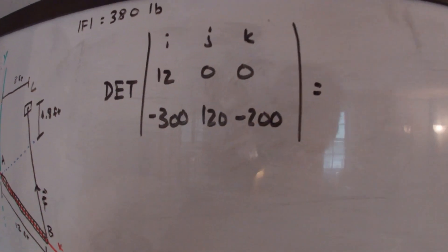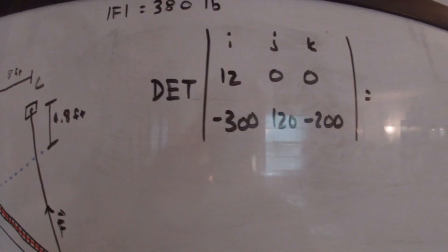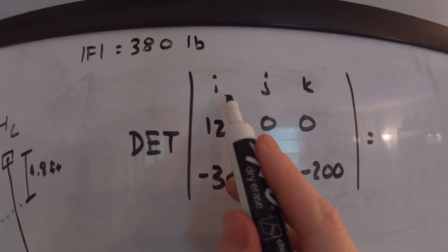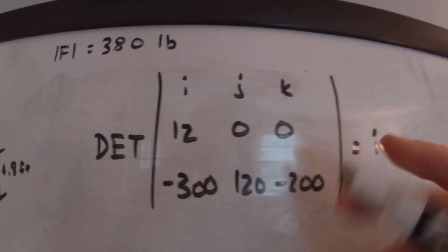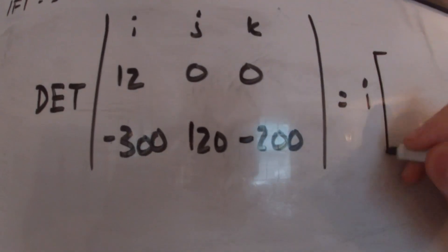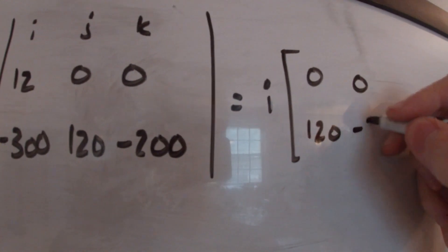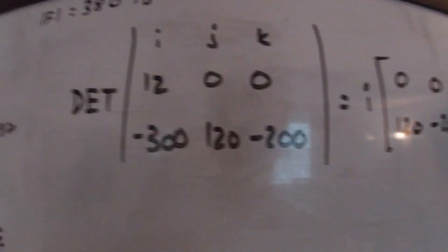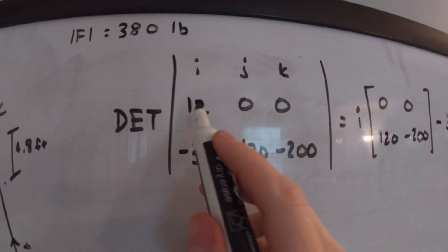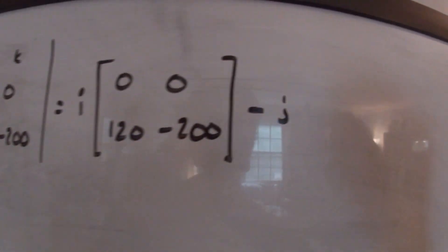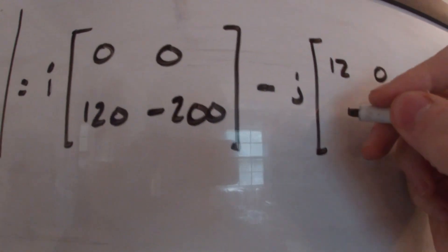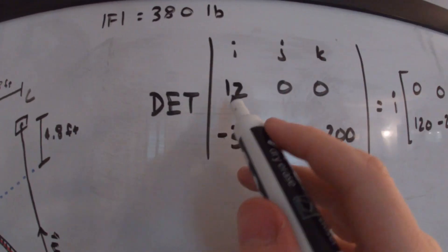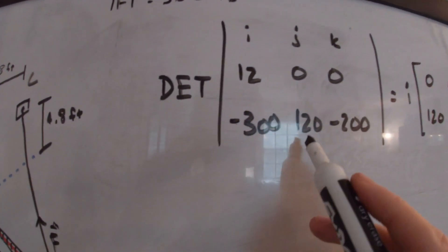When we take the determinant of this 3D matrix, we first break it into three smaller determinants. Our first is I times the determinant of [0, 0; 120, −200]. Then minus J times the determinant of [12, 0; −300, −200]. Then plus K times the determinant of [12, 0; −300, 120].